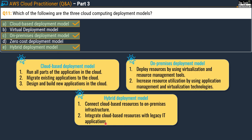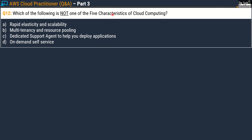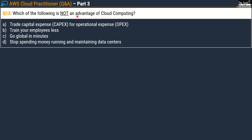Question number twelve: which of the following is NOT one of the five characteristics of cloud computing? Options are: A) rapid elasticity and scalability, B) multi-tenancy and resource pooling, C) dedicated support agent to help you deploy applications, D) on-demand self-service. The correct answer is Option C. Moving to question thirteen: which of the following is NOT an advantage of cloud computing? Options are: A) trade capital expense for operational expense, B) train your employees less, C) go global in minutes, D) stop spending money running and maintaining data centers. The correct answer is Option B — you still must train your employees to use cloud computing effectively.